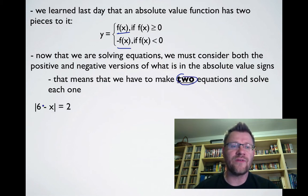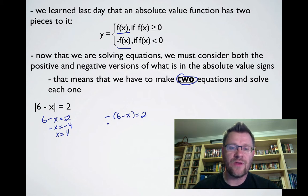Here's a quick example: |6 - x| = 2. If we remove the absolute value sign, 6 - x = 2, but it could also be negative, so -(6 - x) = 2. Solving both equations: -x = -4, so x = 4, and -6 + x = 2, so x = 8.